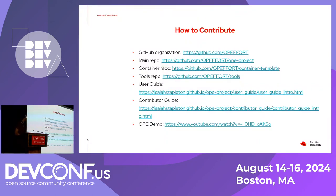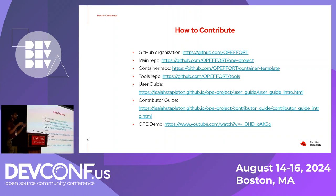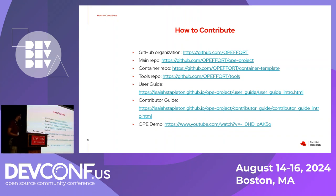How can you contribute? We have our GitHub organization on GitHub — OPEpport — and you can see all the repositories through that link. We have our main repo, the OPE project, which serves as an example of an OPE project and has a readme. We have the container repo where the base OPE container comes from, a tools repo where the OPE tool and other tools are, and a user and contributor guide. There's also a 25-minute demo I recorded that goes more in-depth into how to actually use OPE — it covers seeding a new open education project, building containers, building and populating textbooks, and publishing those. You can find it by Googling 'open education project Red Hat Research.'